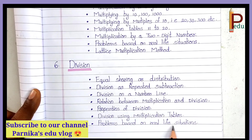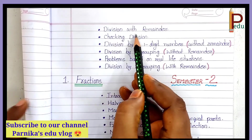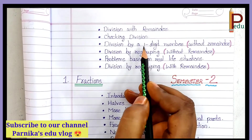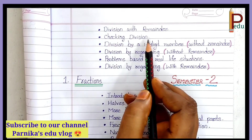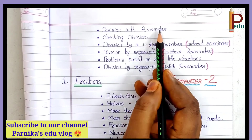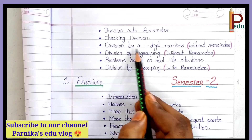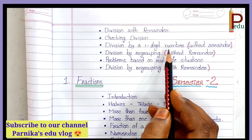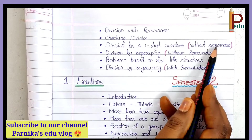Next, Problems based on real life situations — nothing but word problems. Next, Division with Remainder — when dividing a number, whatever remains is called the remainder. We will have problems on this. Next, Checking Division. Next, Division by a One-Digit Number without Remainder — how to divide by a one-digit number giving zero remainder.